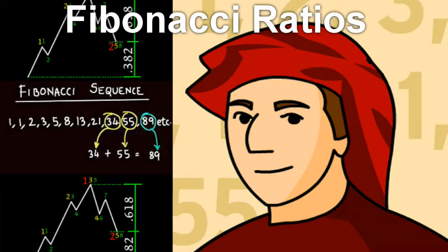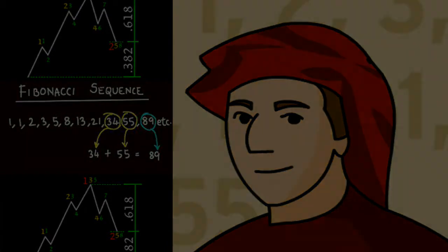Elliott used Fibonacci ratios to analyse the proportionate relationship in time and amplitude between one wave and another. Now, the Fibonacci number sequence and ratios is too big a subject for us to cover here in our Building Blocks series, but a basic explanation should be enough for you to grasp the significance of Fibonacci ratios and the usefulness of the Fib extension and retracement tools. So let's go.